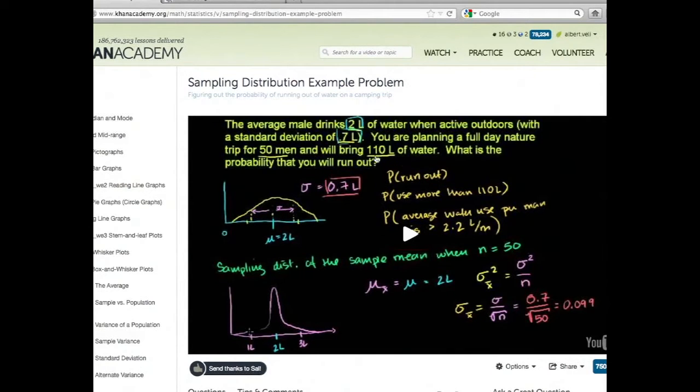The average male drinks two liters of water, so the population mean is two liters and standard deviation is 0.7 liters. Planning a full day nature trip for 50 men means the sample size is 50, and they'll bring 110 liters of water. So the sample mean is 110 divided by 50, which is 2.2.